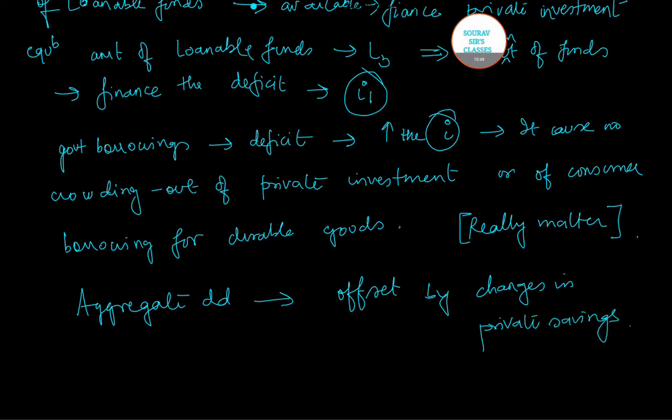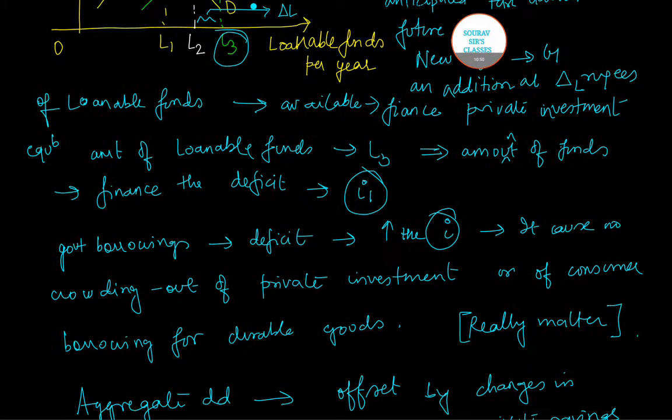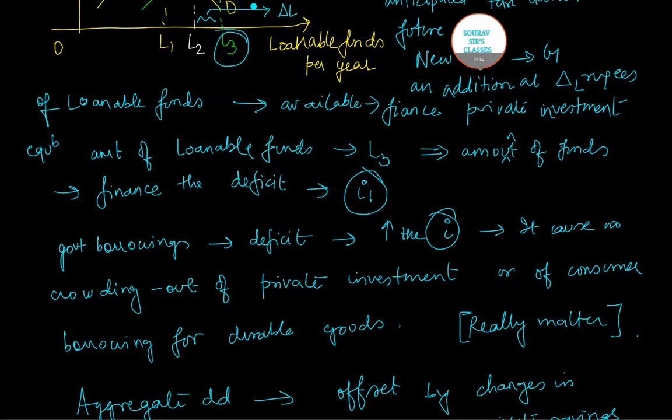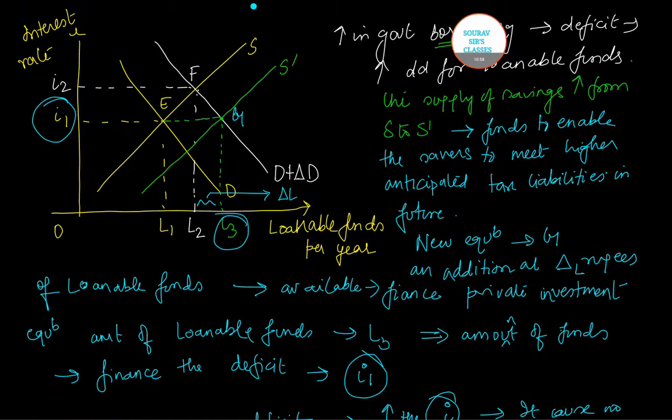This means that changes in deficit will not affect aggregate demand because changes in government borrowing will be offset by changes in private savings. So this is how if at all the increase in government borrowing is offset by an equal reduction in consumption, then we see there is no such change that can be observed in the economy. That means if the Ricardian equivalence prevails, then there will be ultimately no slowdown of the growth rate or future growth rate of the economy.